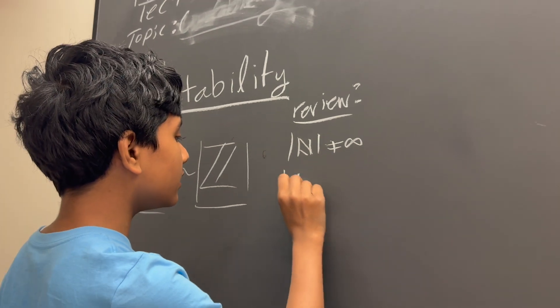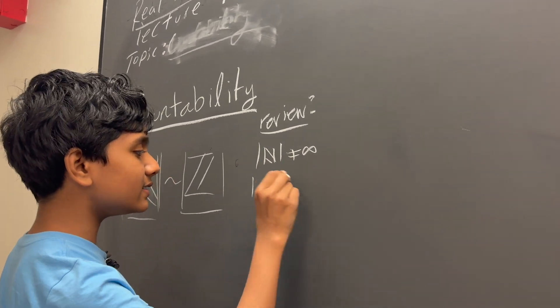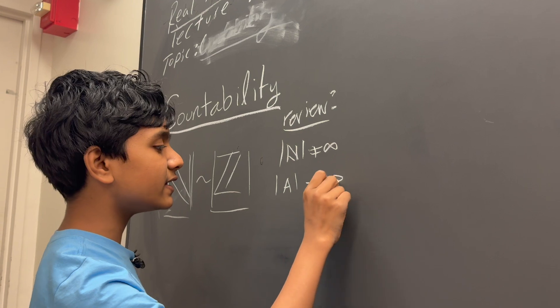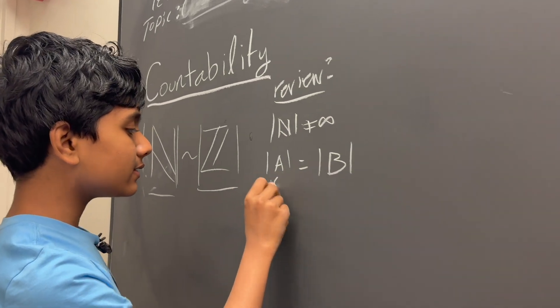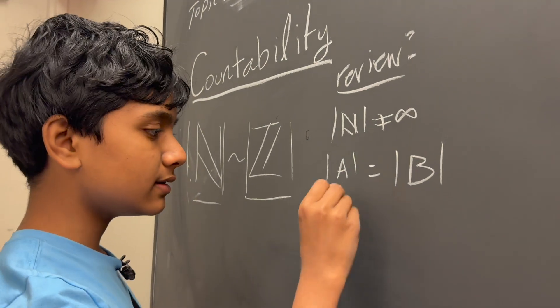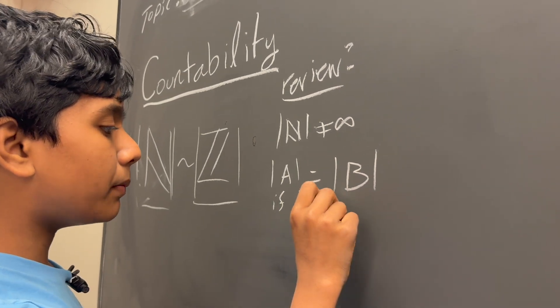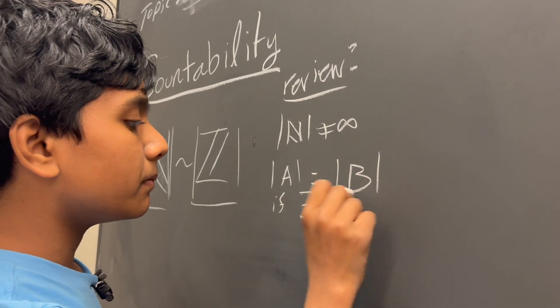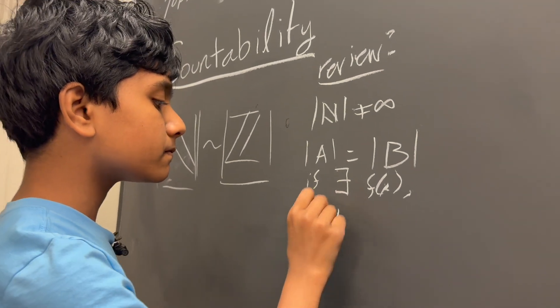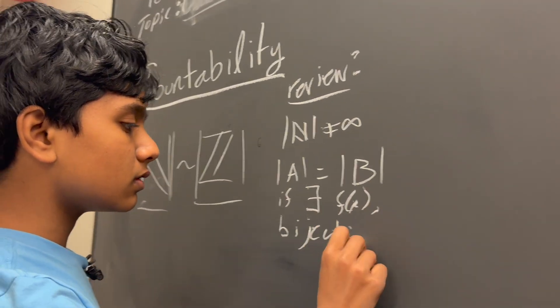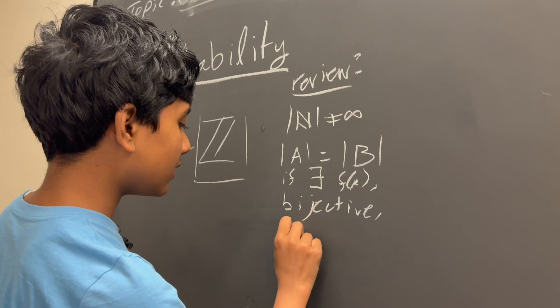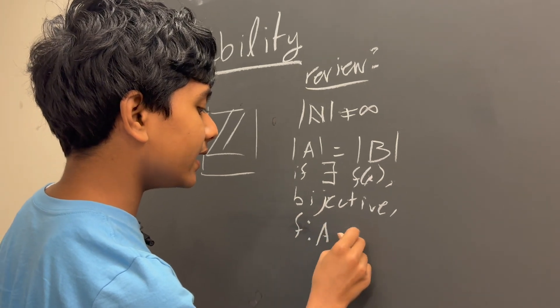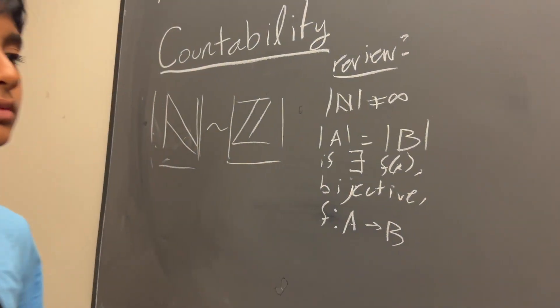The cardinality of an infinite set A is equal to the cardinality of an infinite set B if there exists a bijective function f such that f maps every element of A to B.